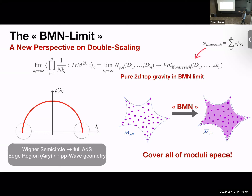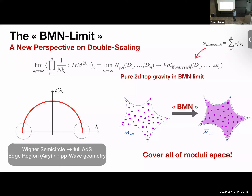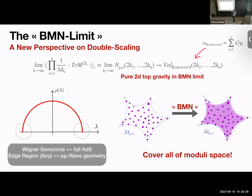One last thing about the BMN limit: we look at this correlator and take the limit of very large k. Many of you have seen the eigenvalue distribution for a Gaussian matrix model — a Wigner semicircle. Trace M to the 2k is the sum of eigenvalues to the 2k, so large k samples the largest eigenvalues, meaning we're sampling the edges of the semicircle — exactly what you do in a double scaling limit where you zoom into that region.